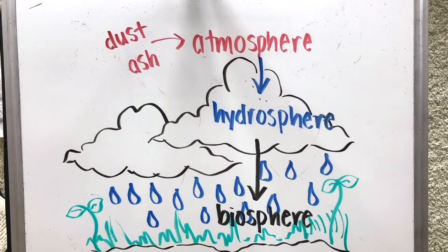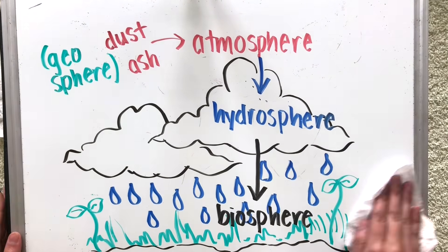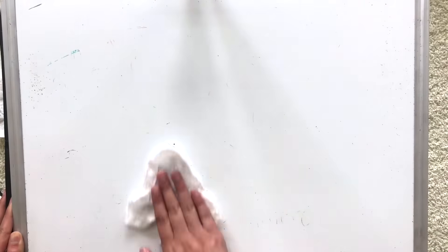These plants in the biosphere then go on to release oxygen into the atmosphere, and humans breathe in that oxygen and, well, it could keep going all these interactions.